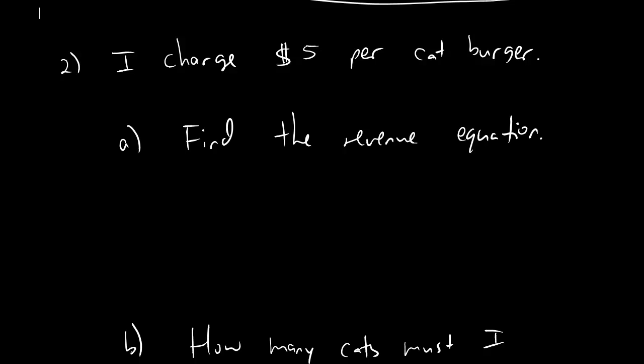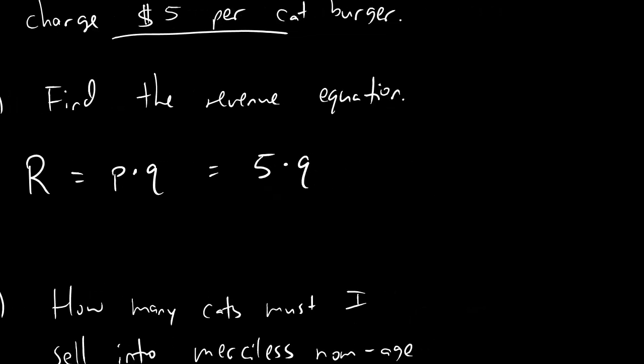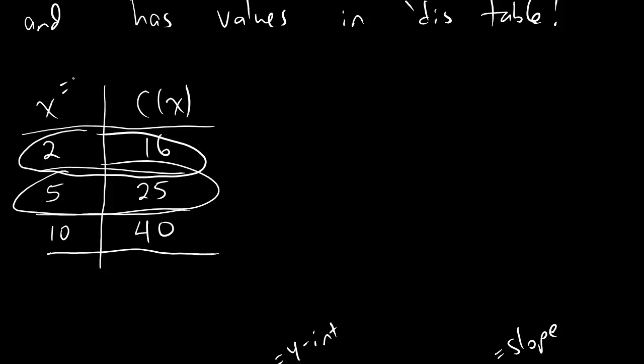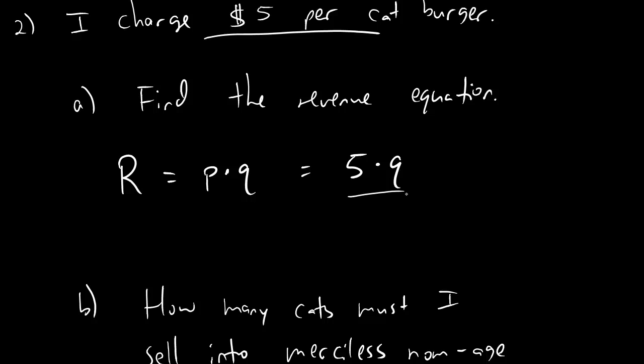Moving on. Here's number two. I charge $5 per catburger and we want to find the revenue equation. Here we just remember revenue equals price times quantity. And now because we're given the price, we can just plug that puppy in. So it's going to be 5 times the quantity. And now what are we using for the quantity? Well, here the quantity is just x. Actually, let's scroll all the way back up. When we had this table, x represents number of catburgers and c of x represents dollars. So because x is the number of catburgers, we already have a name for quantity and that name is just x. So our formula looks like r of x equals 5x. $5 charged for every catburger. That's our revenue.